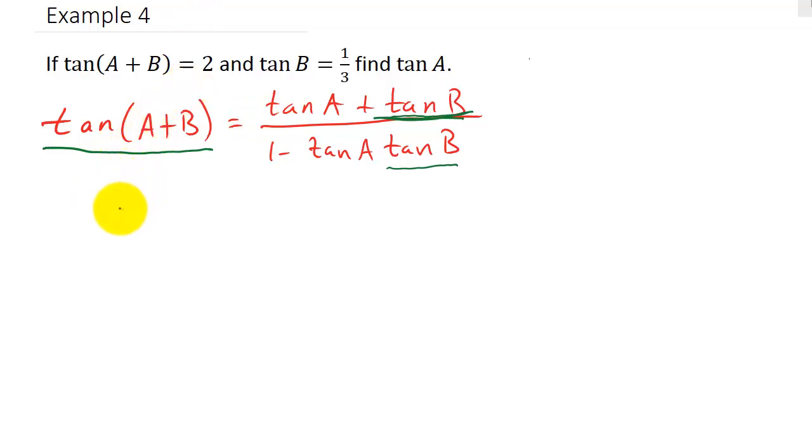So tangent A plus B is 2. So that gives me 2 equals tangent A. I don't know that. Plus tangent B. And tangent B is 1 third. And then that's 1 minus, I don't know, tangent A. And then tangent B is 1 third. All right, so now what we have to do is we have to solve for tangent A.